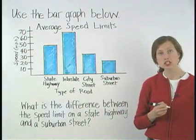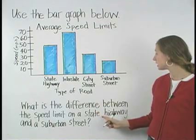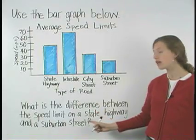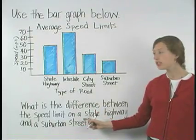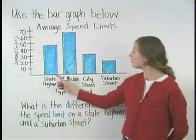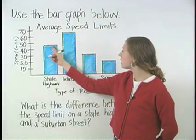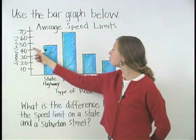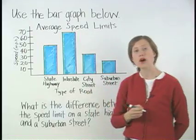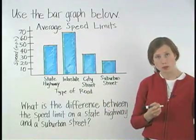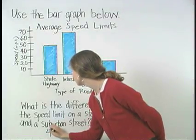We can determine the difference between the speed limit on a state highway and a suburban street by first noticing that the speed limit on a state highway is between 40 and 50 miles per hour, or approximately 45 miles per hour.